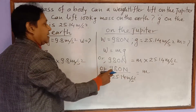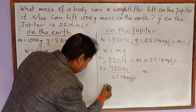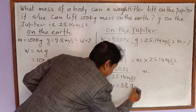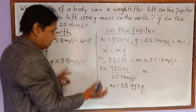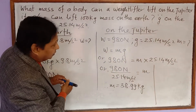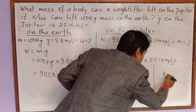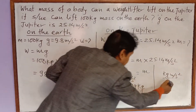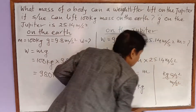Dividing 980 by 25.14 gives a mass of 38.99 kg — you can use a calculator for this. Some of you might have confusion about Newtons divided by meters per second square. Newton in expanded form is kg·m/s², and when divided by m/s², the m/s² cancels out, leaving kilograms. That's why the answer is 38.99 kg.